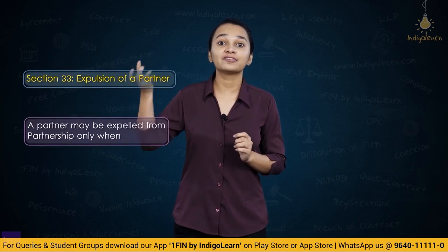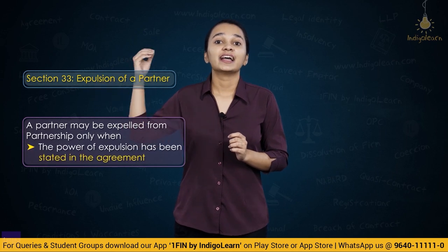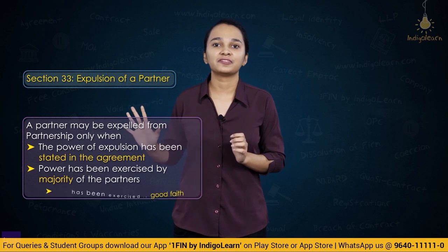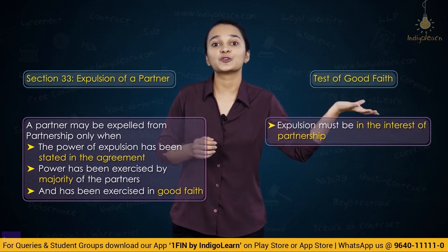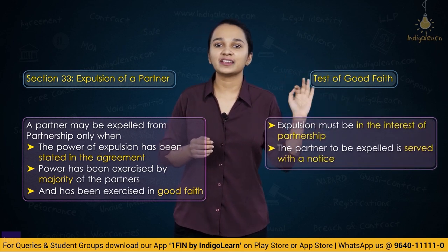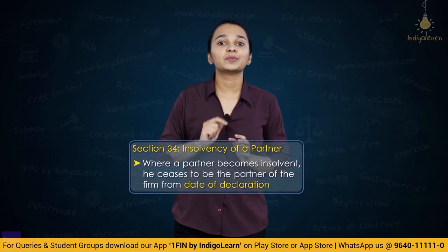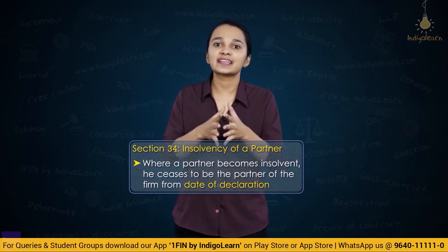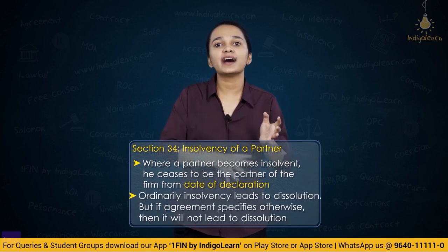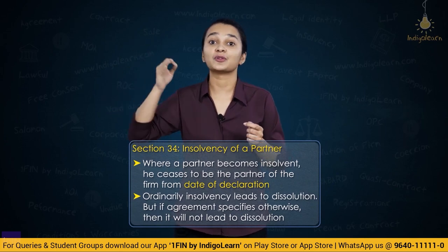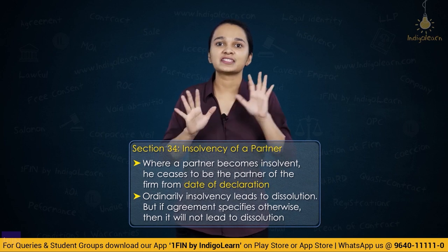Section 33 — expulsion of a partner. A partner can be expelled if the power of expulsion has been given in the agreement, with consent of majority of partners, and in good faith — meaning it must be in the interest of the partnership. The partner being expelled must be given notice and an opportunity to be heard. Section 34 — insolvency of a partner. If a partner becomes insolvent, he ceases to be a partner from the date he is declared insolvent, and neither he nor the firm is liable for each other's acts from that date. Insolvency generally leads to dissolution unless there is an agreement stating otherwise.